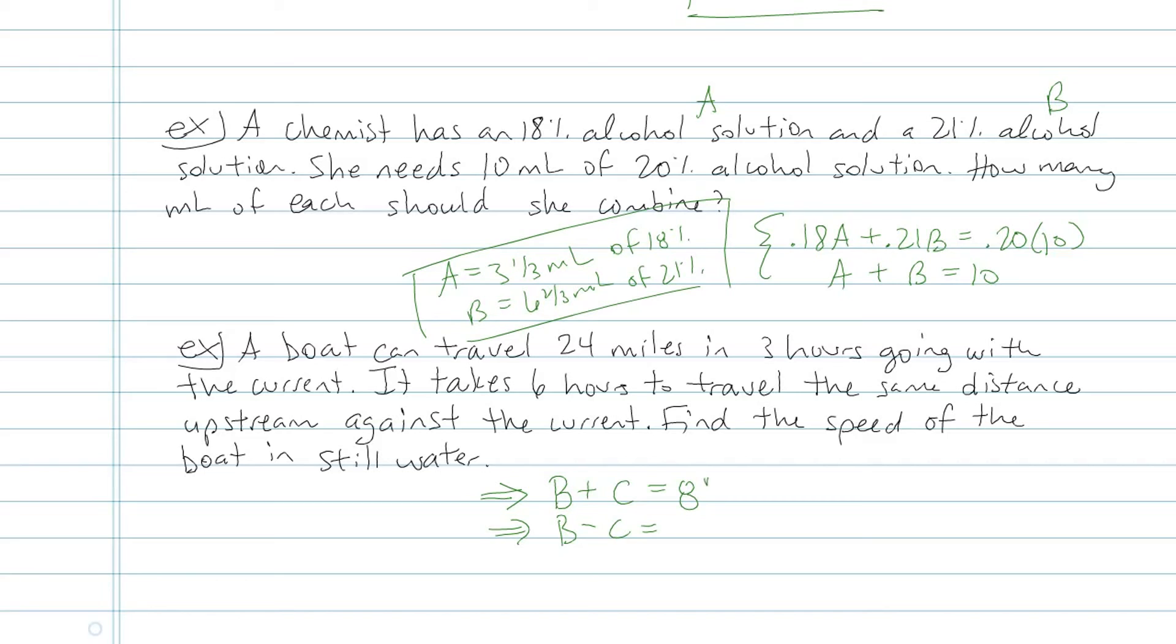And I want to figure out what my miles per hour is. For the first going with the current, it was 24 miles in 3 hours. Now it's 24 miles in 6 hours, so my miles per hour there is 4. That's it. That's my system of equations. It's pretty set up. Add vertically, so my currents get eliminated, and I get the boat in still water is equal to 6 miles per hour.